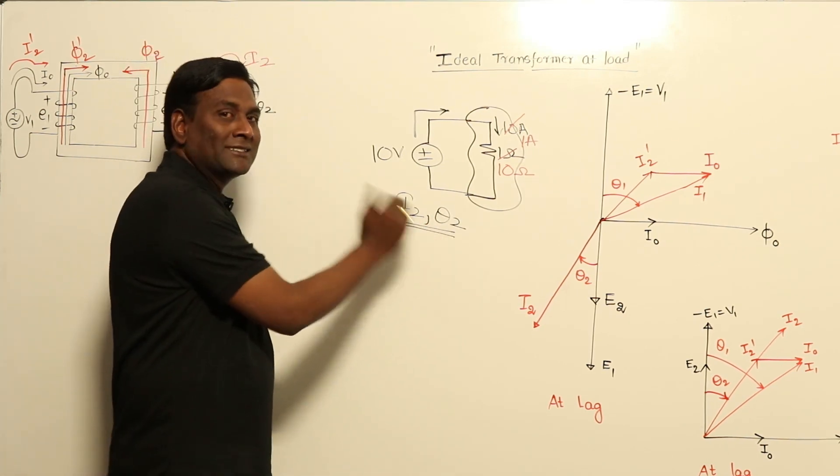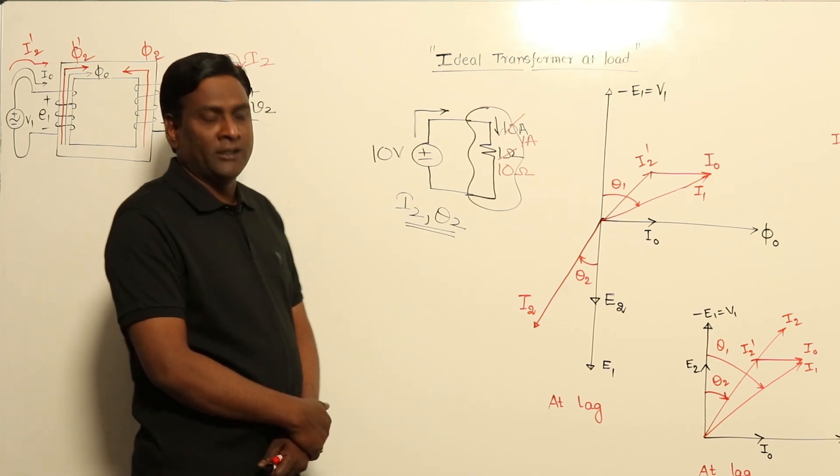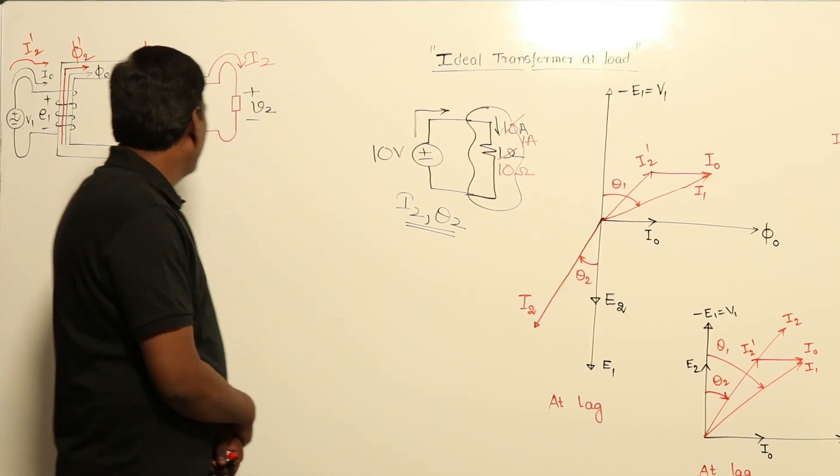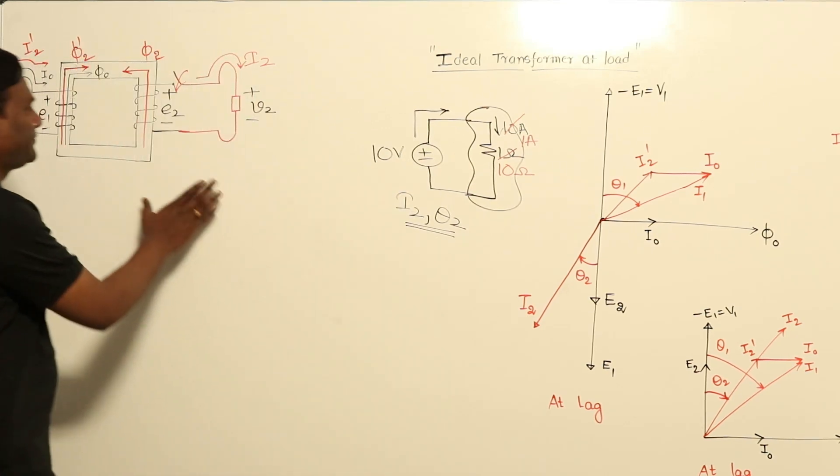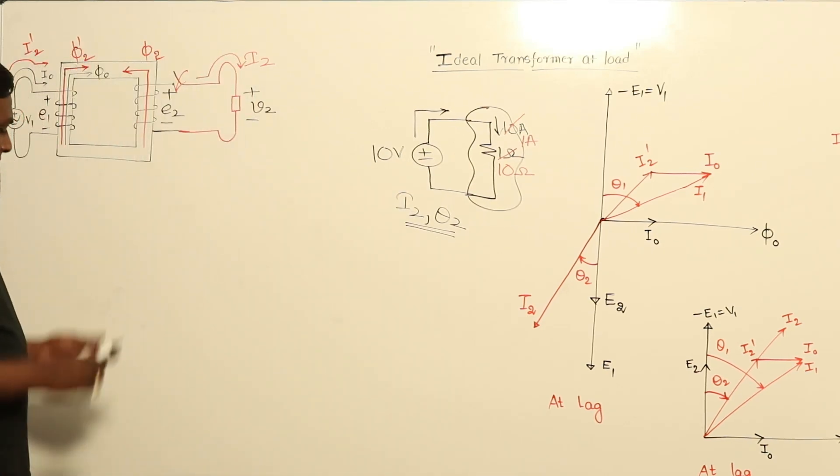The two independent variables in a transformer are: I2 magnitude and power factor angle θ2 — both decided by the load. We have no control over them.